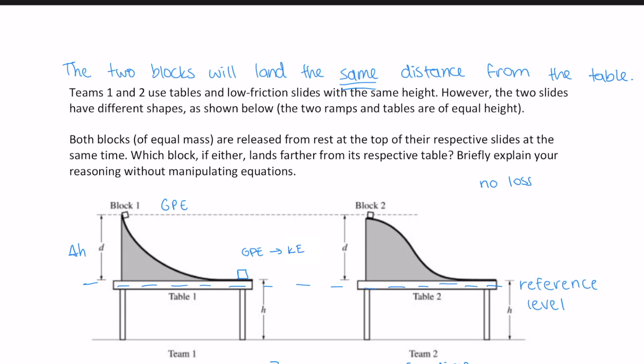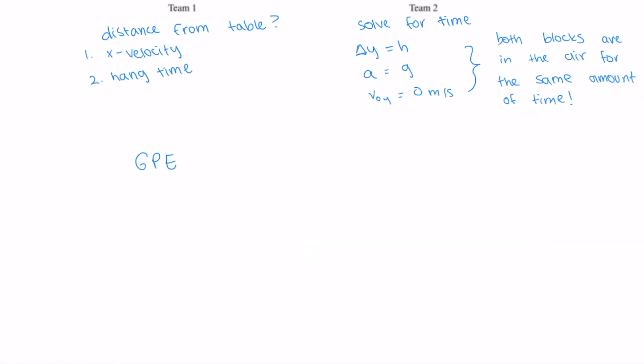Overall, this problem is helpful because it reinforces how gravitational potential energy is related to kinetic energy, as well as connecting concepts related to energy with concepts related to kinematics. This problem also demonstrates that if two objects of the same weight start at rest and travel the same distance in the vertical and experience the same amount of loss, then they will end with the same kinetic energy and velocity. If the blocks have different masses, they will end with varying kinetic energies but the same velocity, since the masses divide out when you set gravitational potential energy equal to kinetic energy in the equation mg delta H equals one-half mv squared.